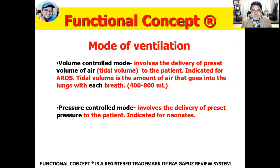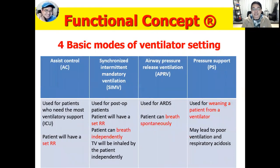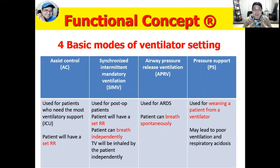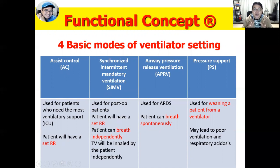There are four basic modes of ventilator settings. The assist control, or AC mode, is used for patients who need the most ventilatory support, such as those in the ICU. When AC mode is used, the patient will have a set respiratory rate — for example, if the ventilator is set at 14 breaths per minute, that will be the patient's rate. Synchronized intermittent mandatory ventilation, or SIMV, is used for post-operative patients and also provides a set respiratory rate.